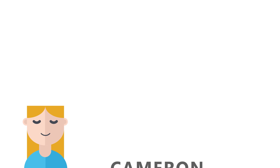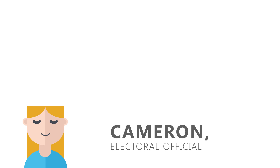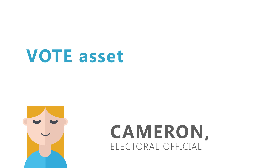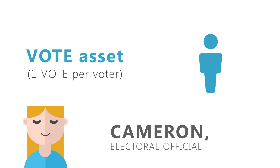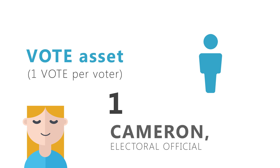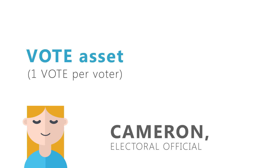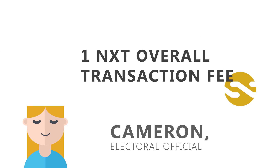Meanwhile, his sister Cameron, also an electoral official, creates the VOTE asset with a limit of the amount of people registered to vote. Cameron collects the account numbers from the box and sends out one VOTE asset to each of the registered voters before the polls open, in addition to one NXT to pay for the transaction fee.